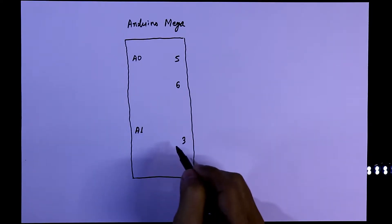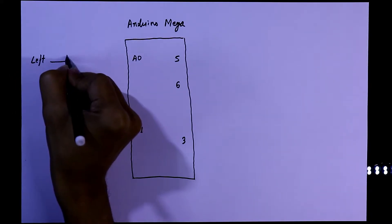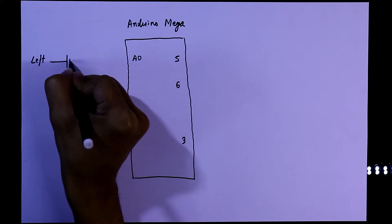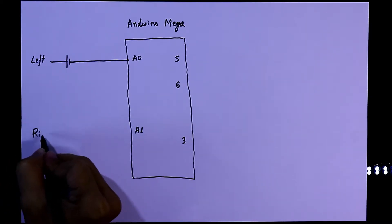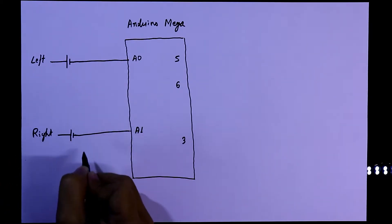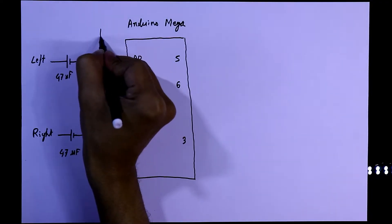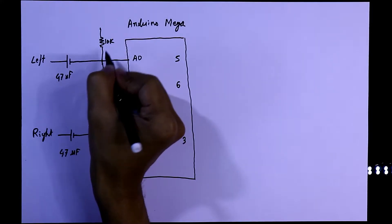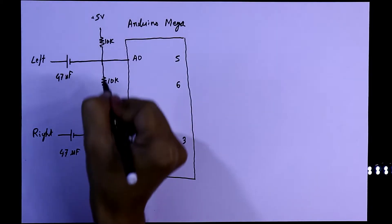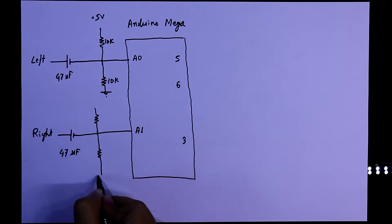From the left channel we have to connect a capacitor in series and then connect it to the Arduino. We have to do the same for the right channel. The capacitor value is 47 microfarad. Along with this we need two resistors — these are 10 kilo ohms. One resistor is connected to plus 5 volt and another one is connected to ground. We have to do the same for the right channel also.